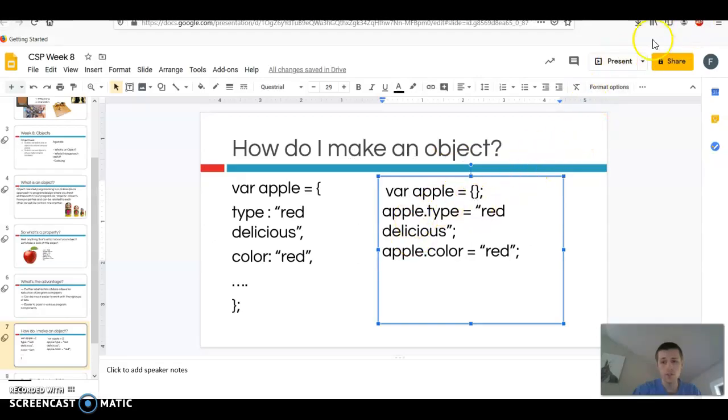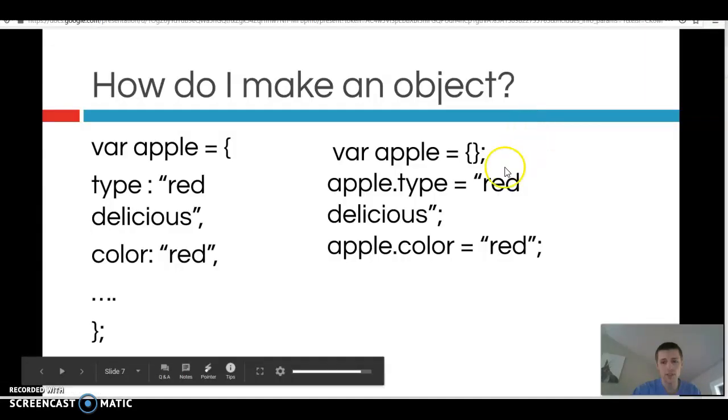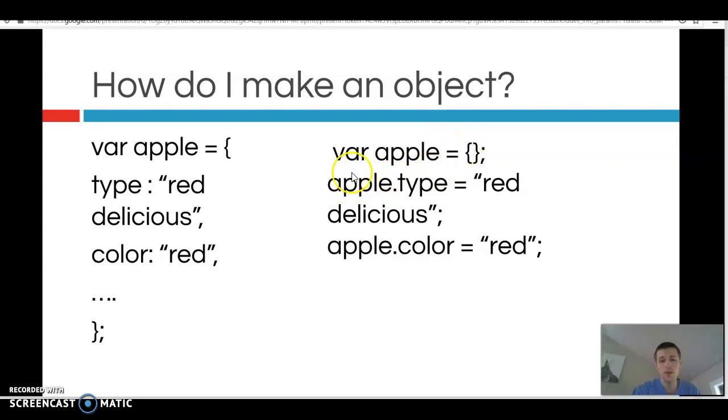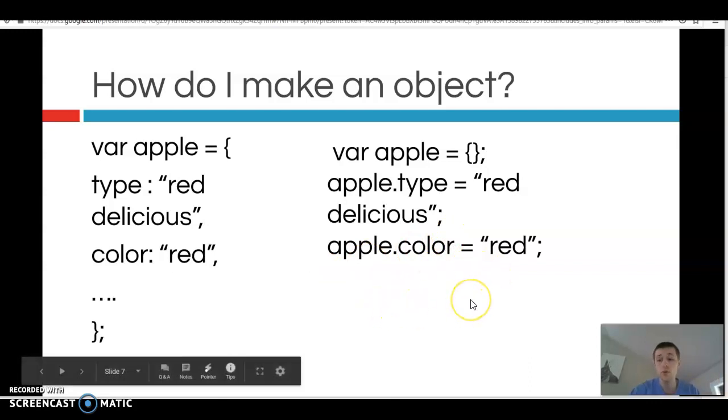We don't forget that equal sign there. The curly braces, the curly braces make it an object. And then after that, you can go ahead and add your types later. So you could say apple dot, or properties, apple dot type, apple dot color, apple dot size dot width, whatever you want afterwards. So those are your two options for how you want to give your objects information to hold.